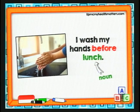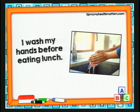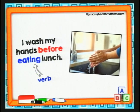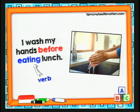Miren cómo quedaría si pongo un verbo. Me lavo las manos antes de comer el almuerzo — I wash my hands before eating lunch. Tenemos la preposición before y el verbo con -ing: eating. Yo me lavo las manos antes de almorzar. Muy importante: I wash my hands before eating lunch. Podemos poner before antes de un sustantivo o un verbo con -ing.